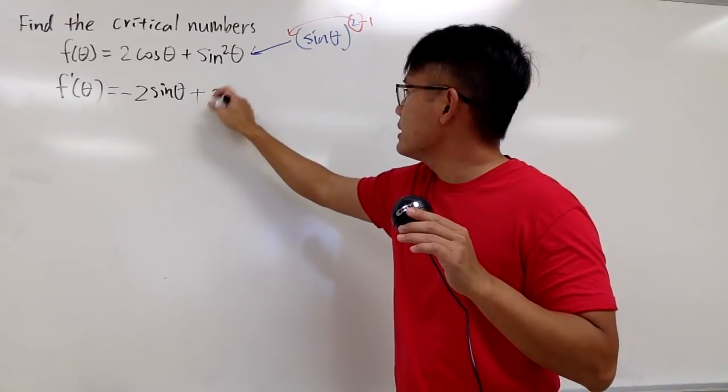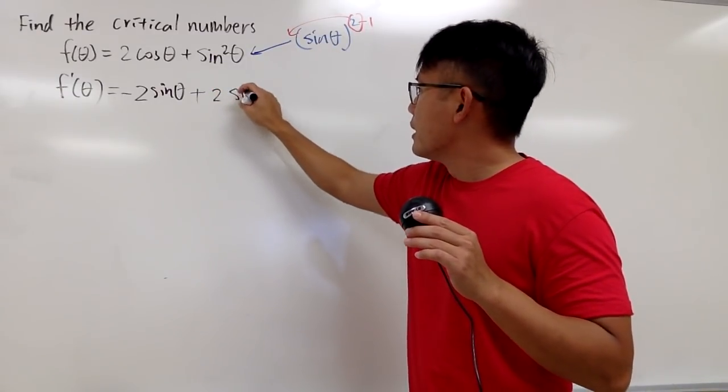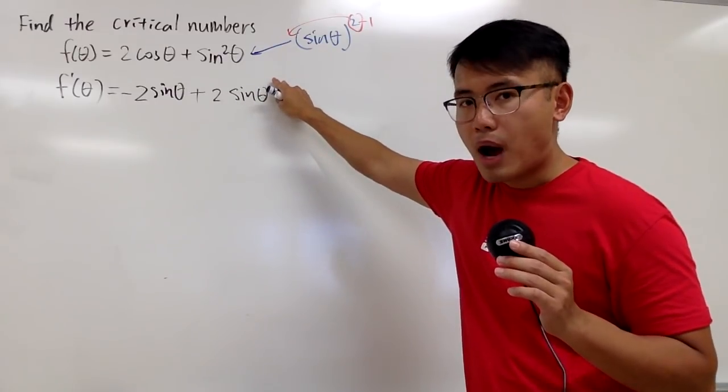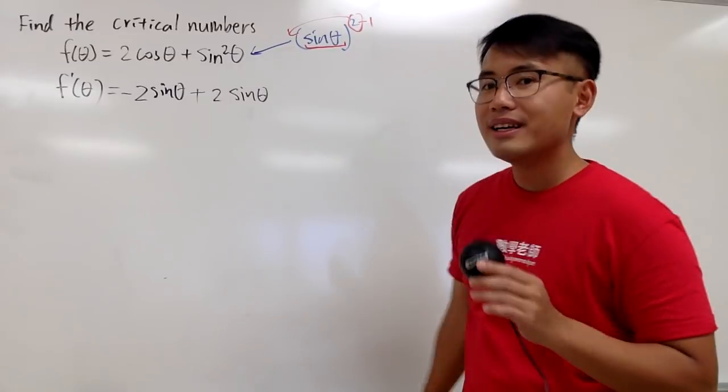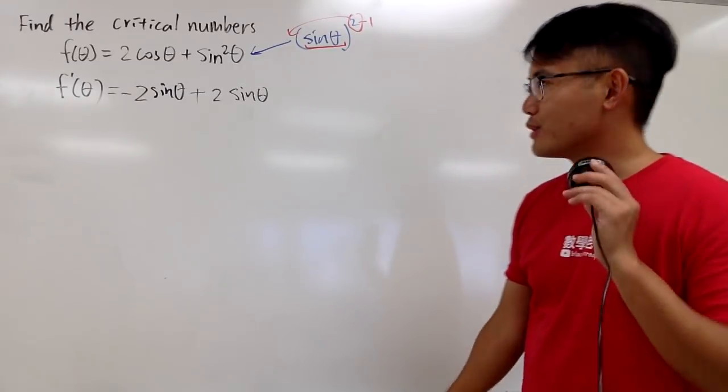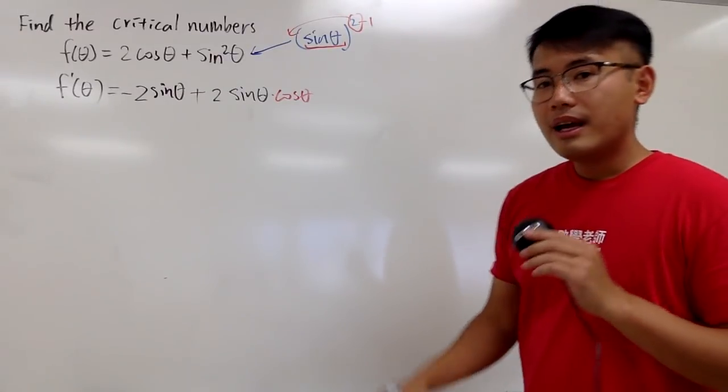First, we have the 2 in the front, right, the power rule. And then, the inside stays the same. We have sinθ, and that's to the first power. And the chain rule says we have to multiply by the derivative of inside. And the derivative of sinθ is cosθ. So let's put that down right here. And this is pretty much it.